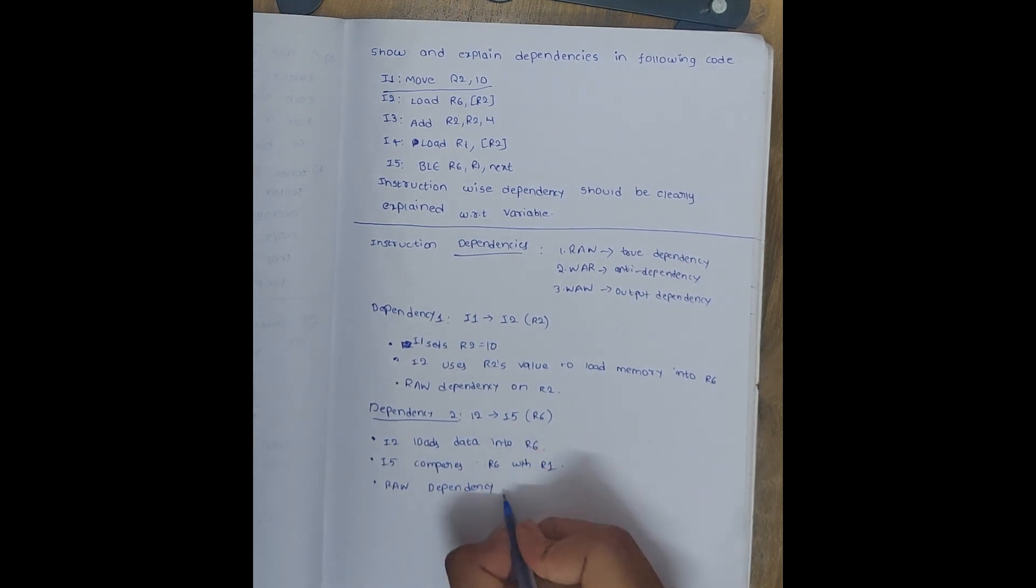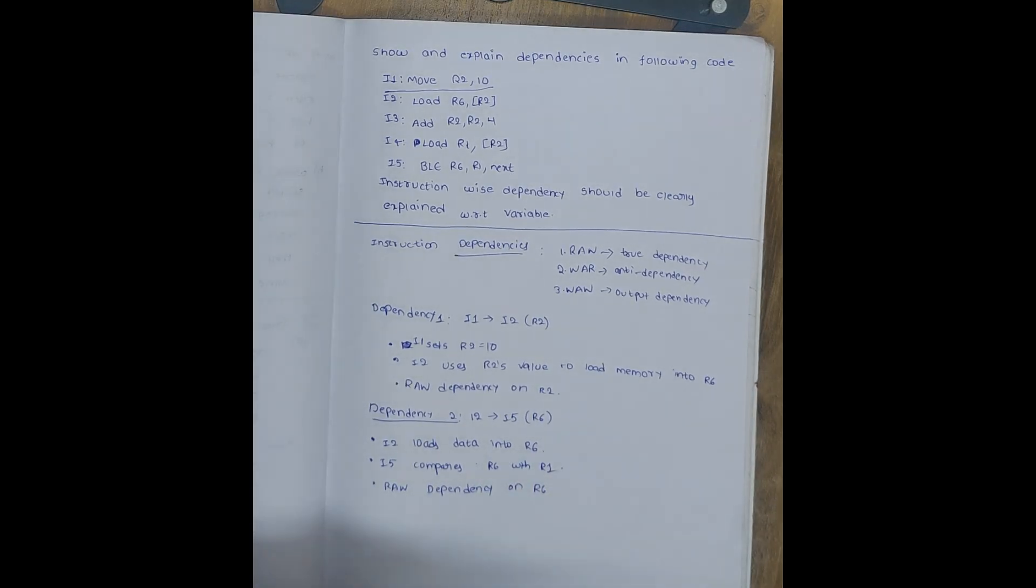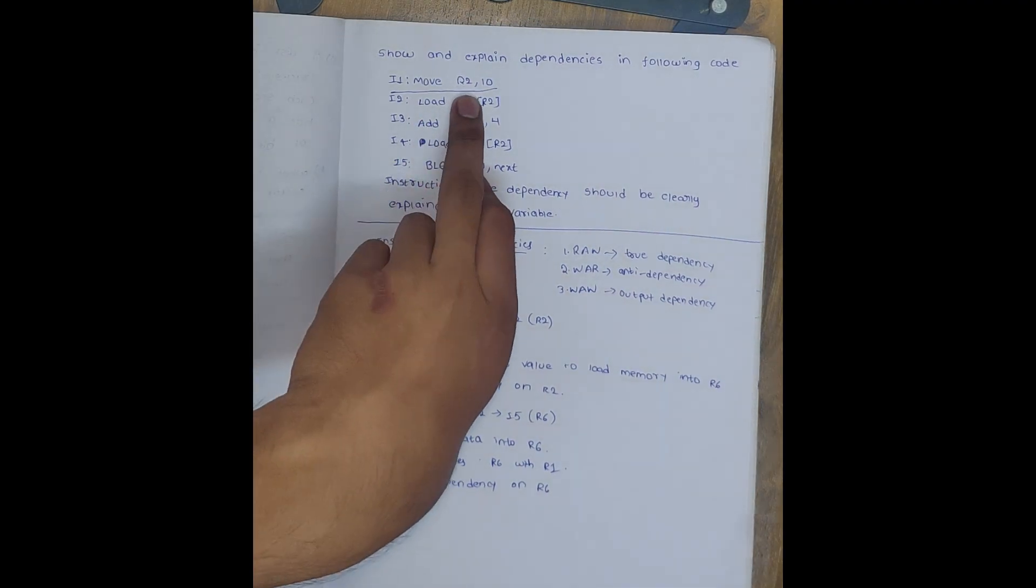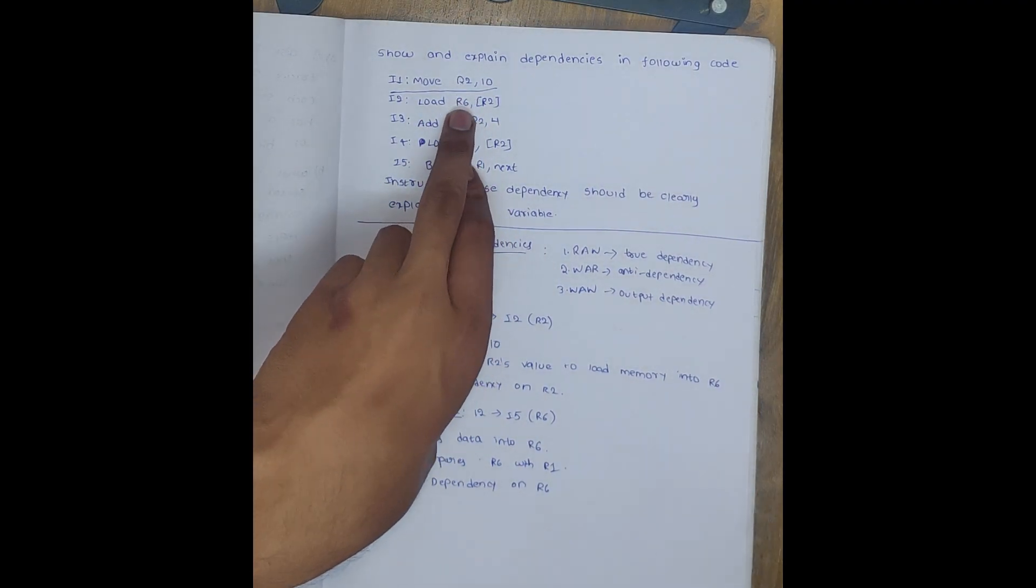This is also RAW dependency on R6. So if we compare it with daily life, you can collect the first parcel after knowing the address. You know the instruction I1 address, you are going to collect the first parcel. So you collect the parcel I2, later you compare it with another parcel I5.